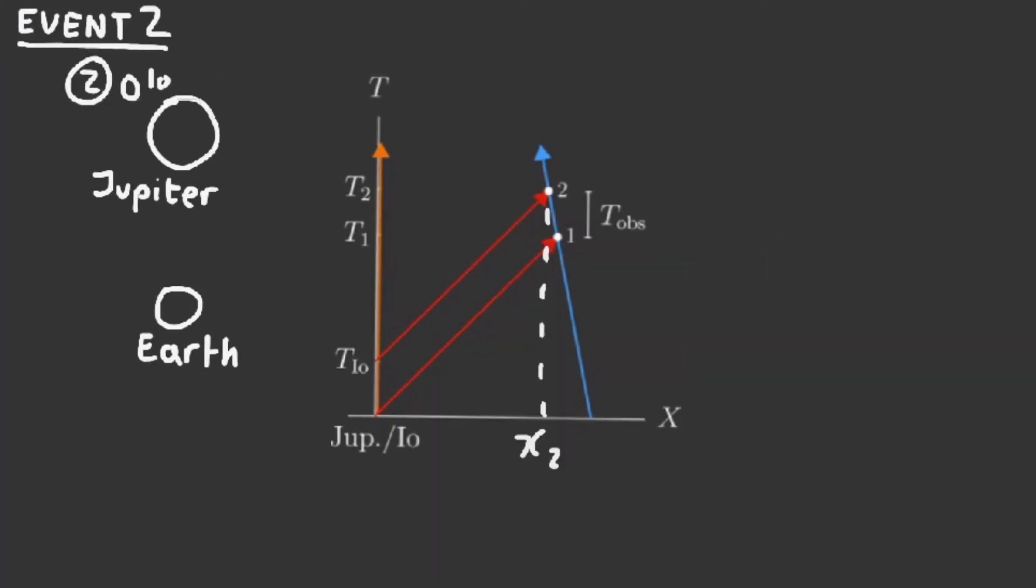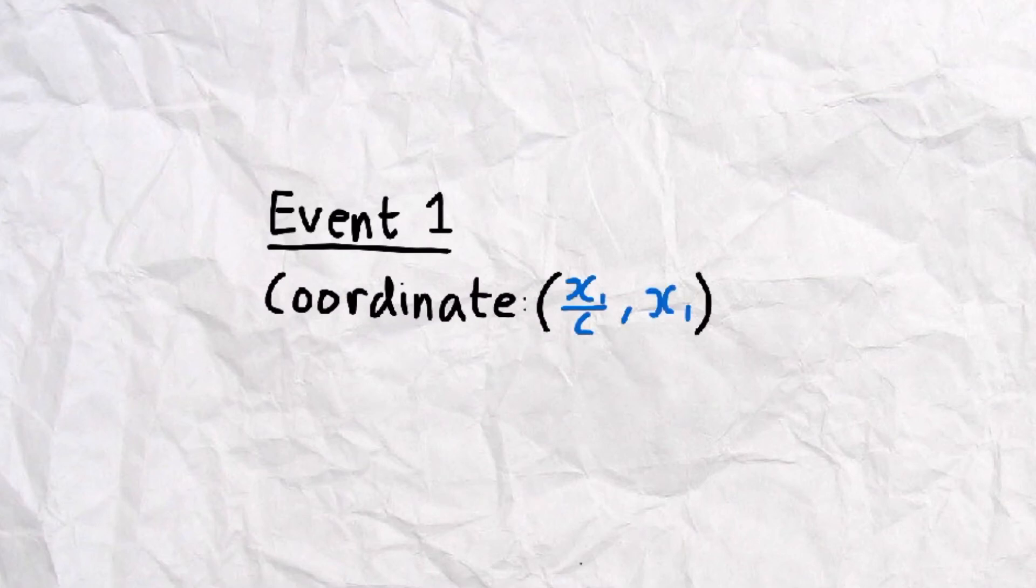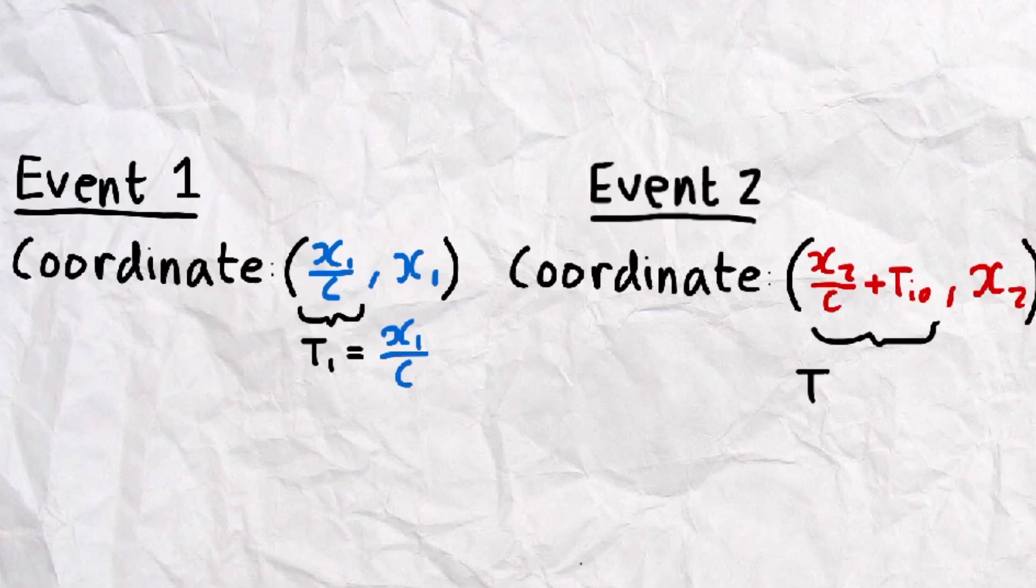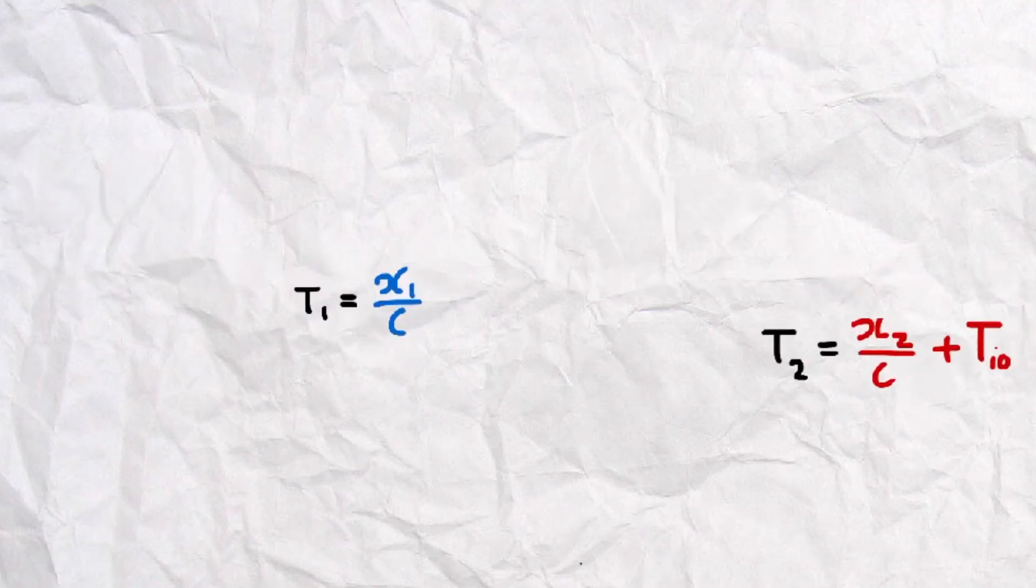Now in event two, the distance between Earth and Jupiter is now smaller. It is decreased to x2. Using the same method as event one, the coordinates of event two will consequently be the following. x2 replaces x1, but notice the additional value of T_Io, the absolute time interval. This represents the additional time between T1 and T2. So Rømer now had two ways to write the universal times of the corresponding events one and two. All he had to do now was simple arithmetic calculations.